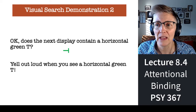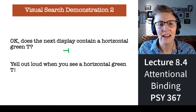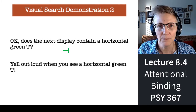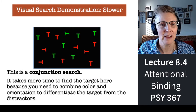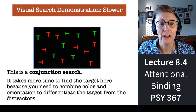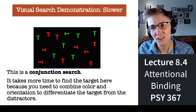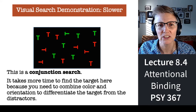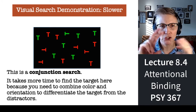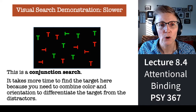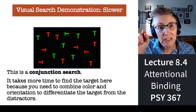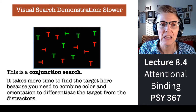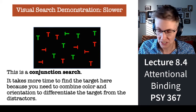Does this display contain a tilted or sleeping green T? Did you find it? You found it, but it took a little while longer. Why did it take longer? Because you couldn't just look for green things and you couldn't just look for tilted letters — you had to put the two together. And according to Anne, that requires attention to be deployed to each little thing. You have to look at each little figure in the display, and that takes attention.